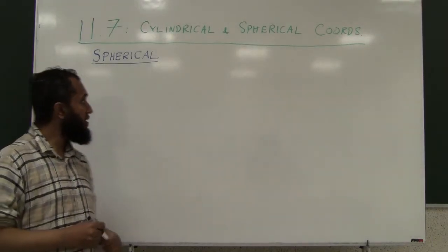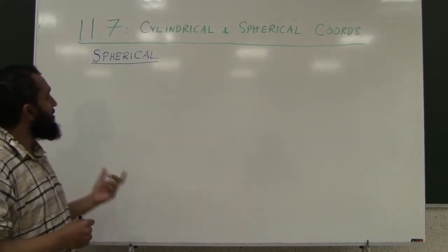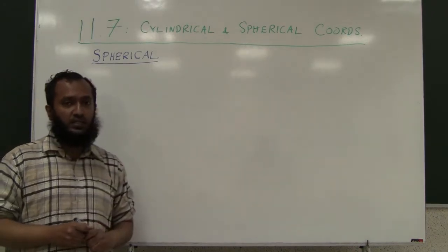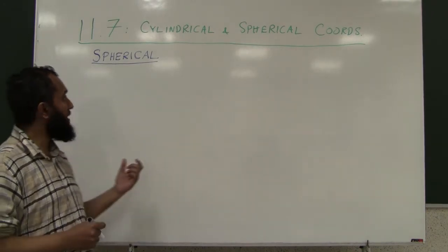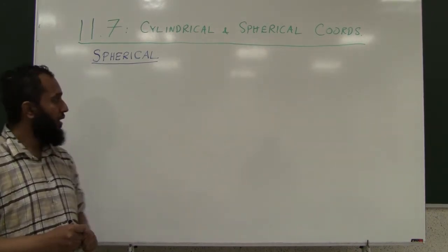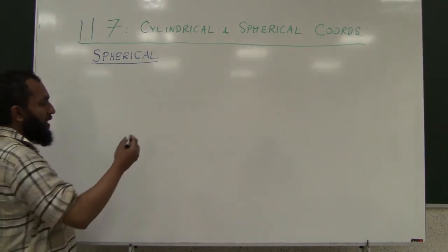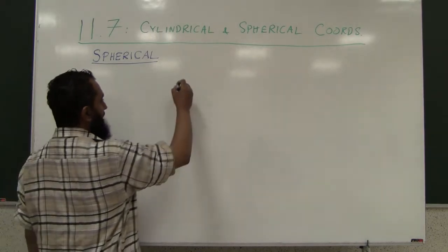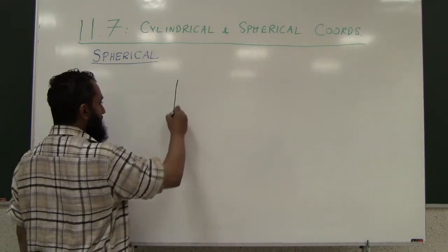In the last two lectures we saw the cylindrical coordinate system. Now we are going to look at the spherical coordinate system and see how points are described in this system.